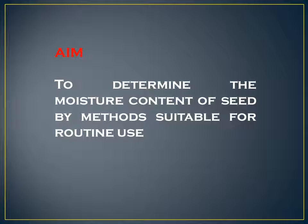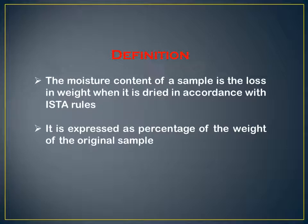Our main goal is to determine the moisture content of seed by methods suitable for routine use — methods that can be performed on a regular basis. The moisture content of a sample is the loss in weight when it is dried in accordance with ISTA (International Seed Testing Association) rules, and is expressed as a percentage of the weight of the original sample.